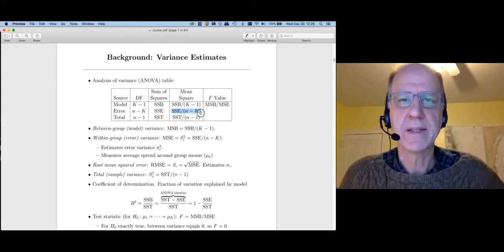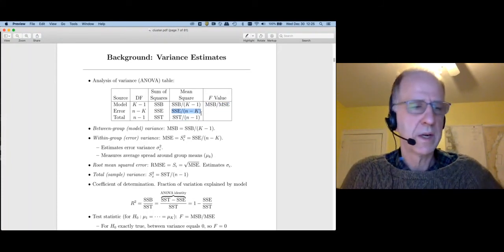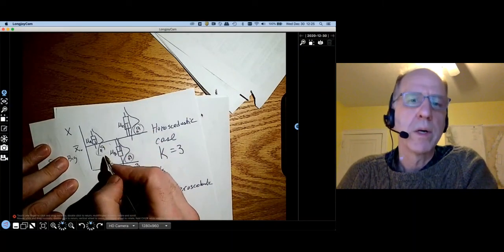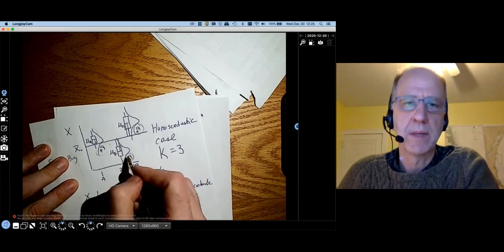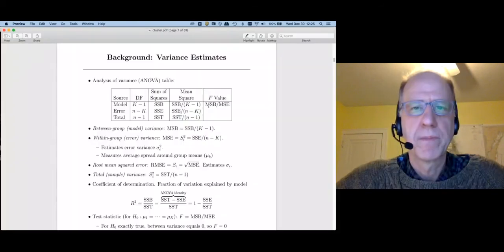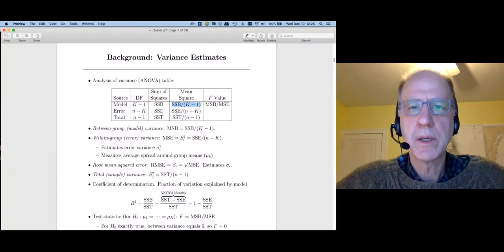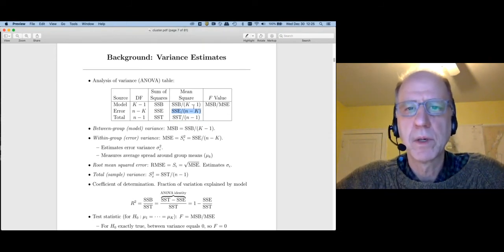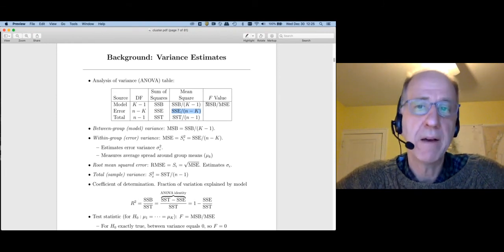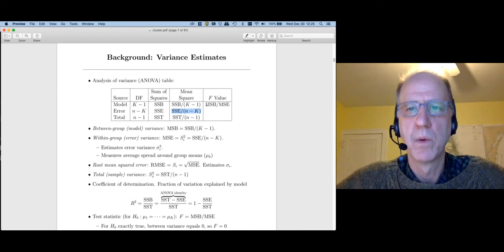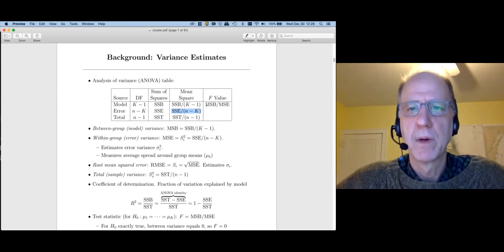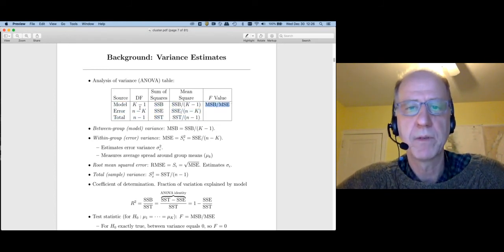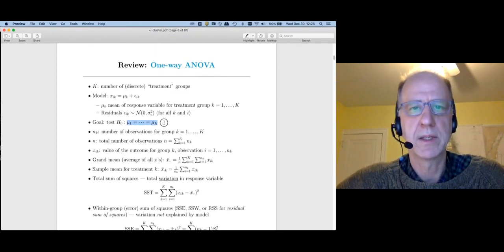Likewise, if we divide SSE by n minus k, we get an estimate of sigma_e^2. We'd have to square them to get the variances, but that's how we would estimate the amount of within group variation. We often call this the mean square between, and this is the mean squared error or the mean square within. If we were to compute the ratio of those, we have an F-statistic. That F-statistic is what gets reported whenever you do a one-way analysis of variance. We then look up the tail probability of that F-statistic using these degrees of freedom to find the p-value that allows us to test this null hypothesis.